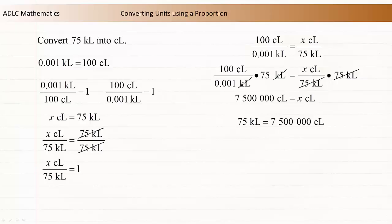Finally, we'll answer the original problem. 75 kiloliters is equal to 7,500,000 centiliters.